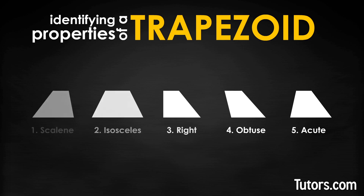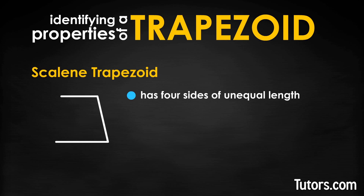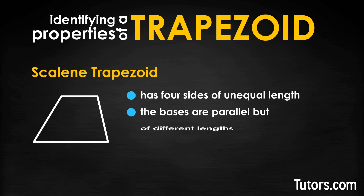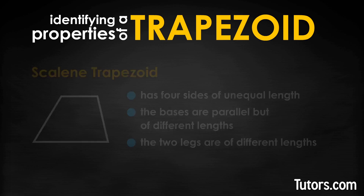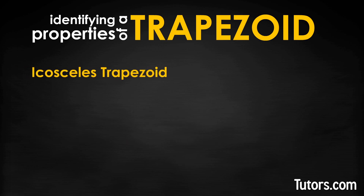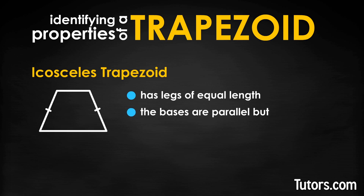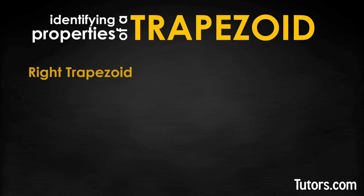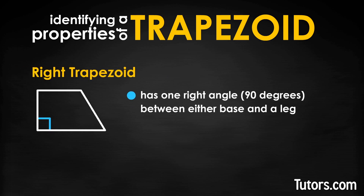Let's go over each one. A scalene trapezoid has four sides of unequal length — the bases are parallel but of different lengths, and the two legs are of different lengths. An isosceles trapezoid has legs of equal length, with bases that are parallel but of different lengths. A right trapezoid has one right angle of 90 degrees between either base and a leg.